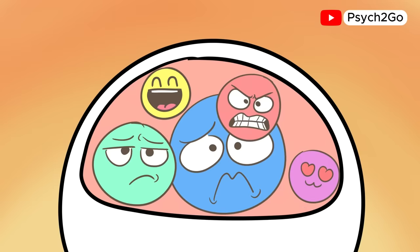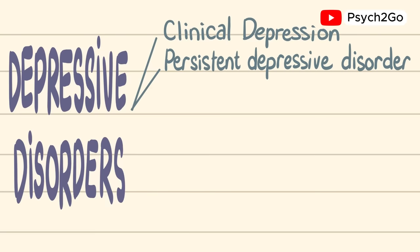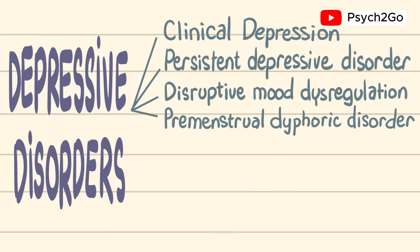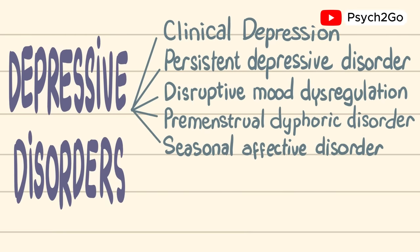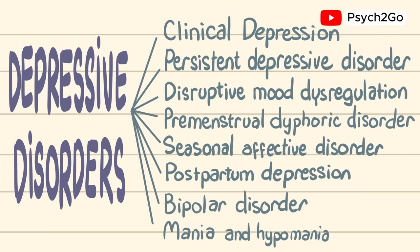Depressive disorders refer to any mood disorder that typically has sadness as a predominant symptom. Some disorders that fall under a depressive disorder are clinical depression, also known as major depression, persistent depressive disorder, disruptive mood dysregulation, premenstrual dysphoric disorder, seasonal affective disorder, postpartum depression, bipolar disorder, mania, and hypomania.